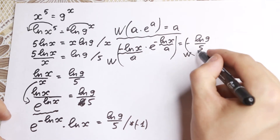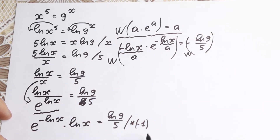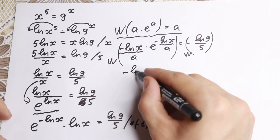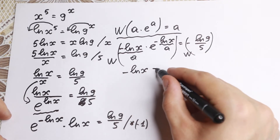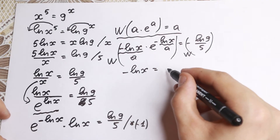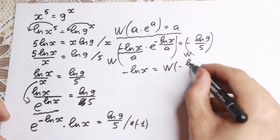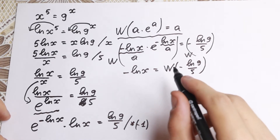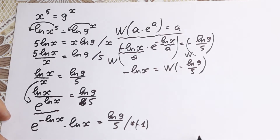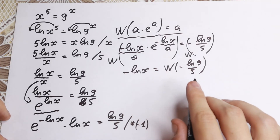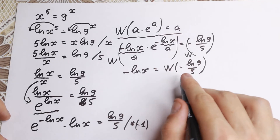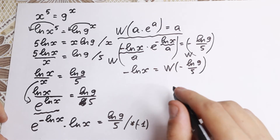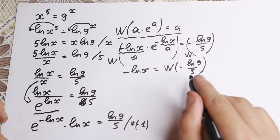Applying the Lambert W function to both sides: on the left we simply get our a, which in our case equals minus natural log x. On the right-hand side we have the Lambert W function of minus natural log 9 over 5 — this is a constant, and we can easily find its value. So we have: minus natural log x equal to W of minus natural log 9 over 5.